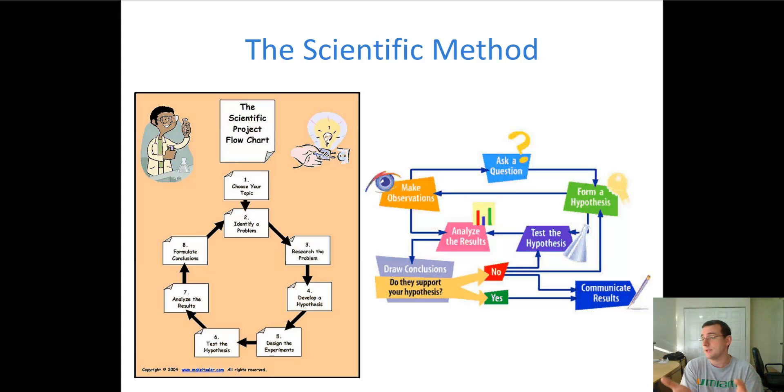You start with the question because that's what scientists do. They question everything. And then in an attempt to understand that question, you make observations. You try to research the problem. And then when you think you know the problem enough, you make some sort of inference about what's happening here.